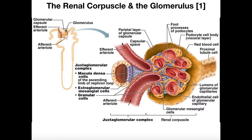Whenever we filter that blood, we get what's called filtrate. And that filtrate is then going to move through this tubule system — the proximal convoluted tubule, then into what we call the loop of Henle, which has a descending limb and then an ascending limb. Then we move the filtrate into the distal convoluted tubule, and then not shown here is what's called the collecting duct. The collecting duct is the end of it, and what comes out of that is the urine, which is going to travel down the ureters into the bladder and then ultimately through the urethra.